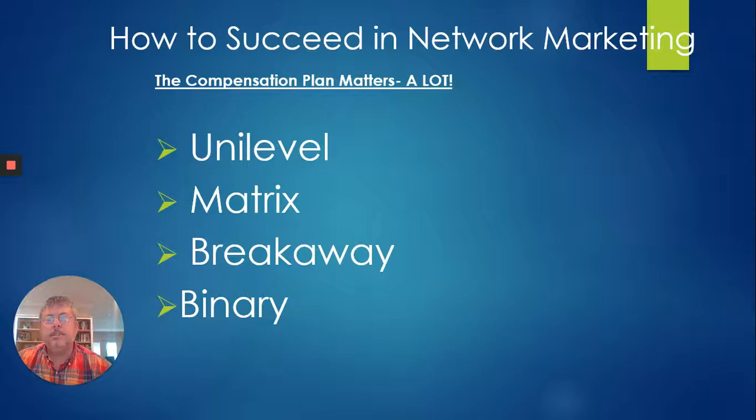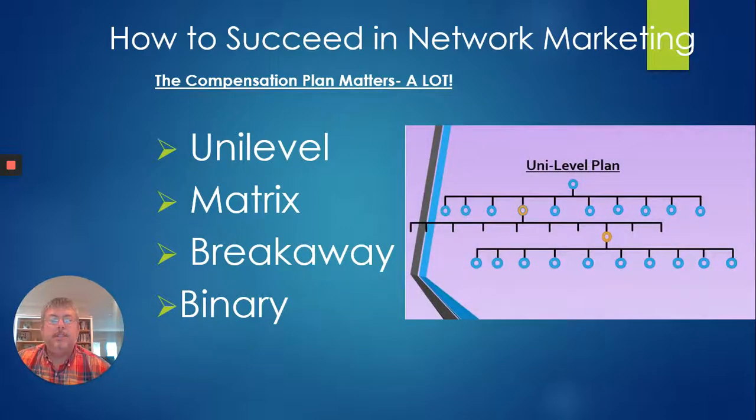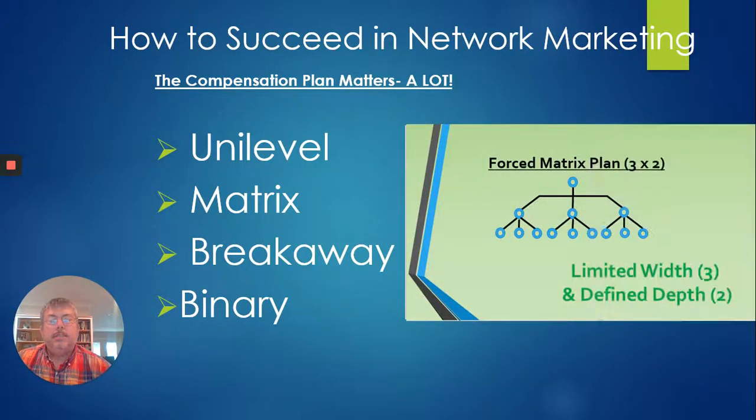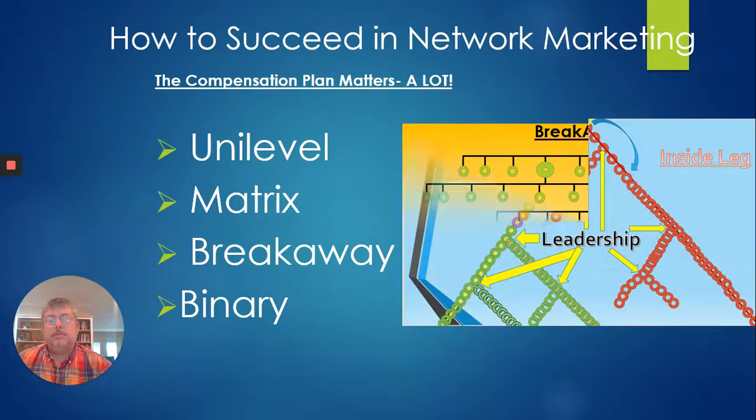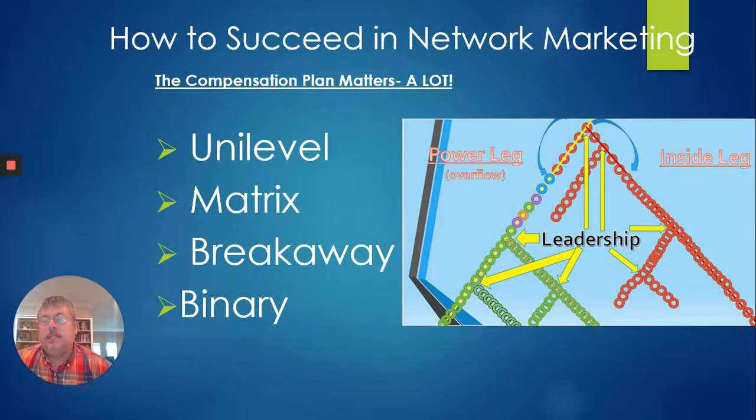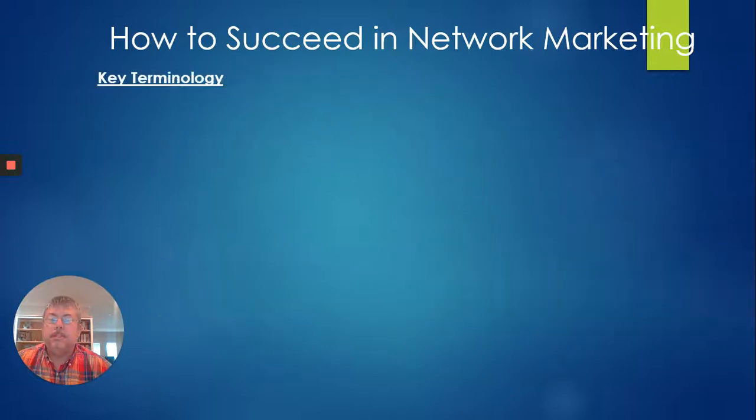So these are the four types of compensation plans that are common in the network marketing industry. You have the unilevel plan, the matrix plan or force matrix is what it's sometimes called, the breakaway plan and the binary plan. So we're going to go through all these and show you exactly how they work and hopefully in a way that can make you understand them a little bit better.